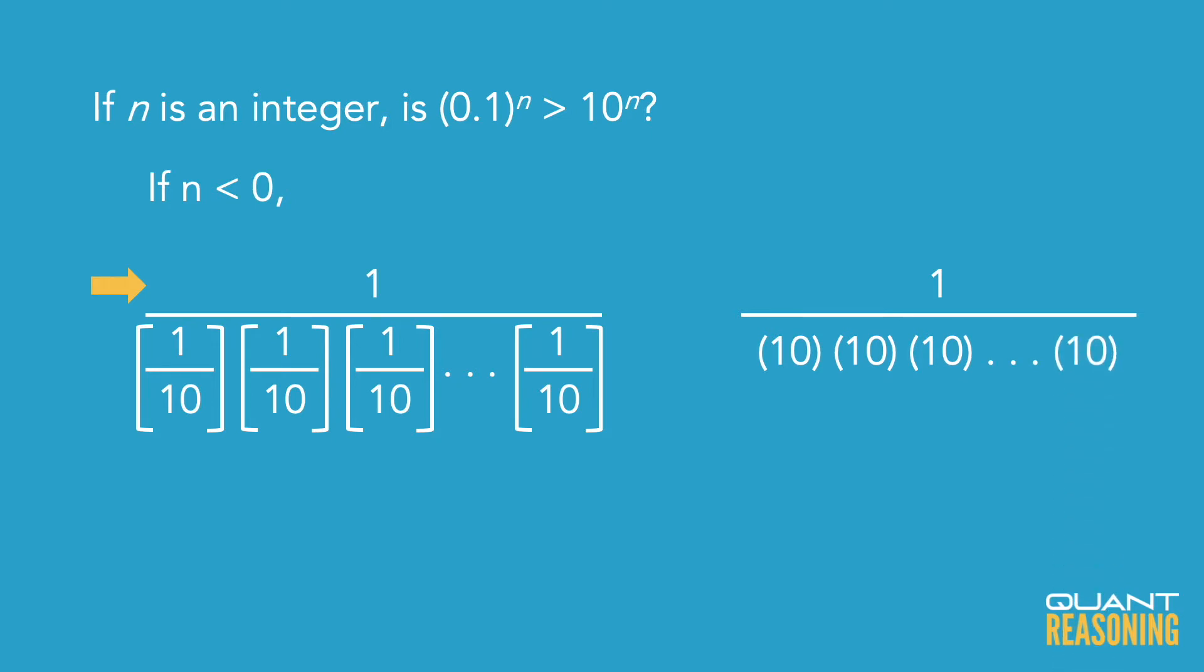And the 10 times 10 times 10 a bunch of times turns into 1 over 10 times 10 times 10 a bunch of times. So it turns out that if n is negative, then these bases essentially switch. What used to be 1 tenth is now 10 and what used to be 10 is now 1 tenth.